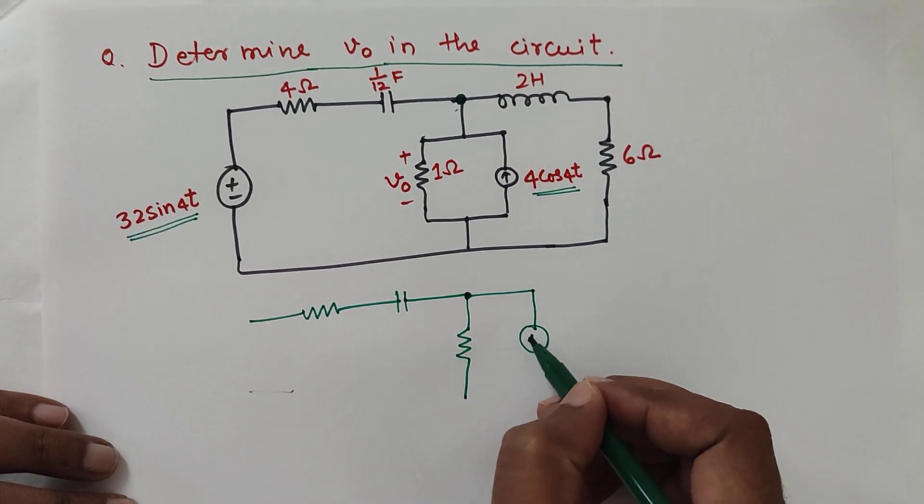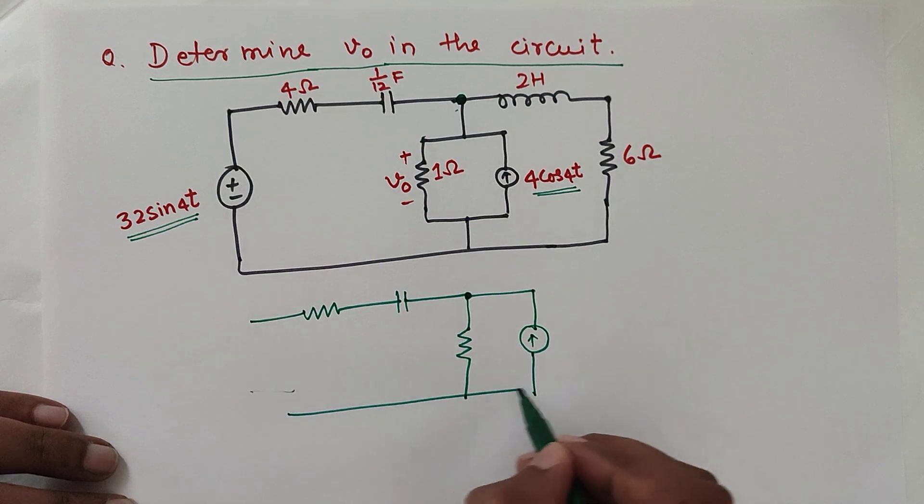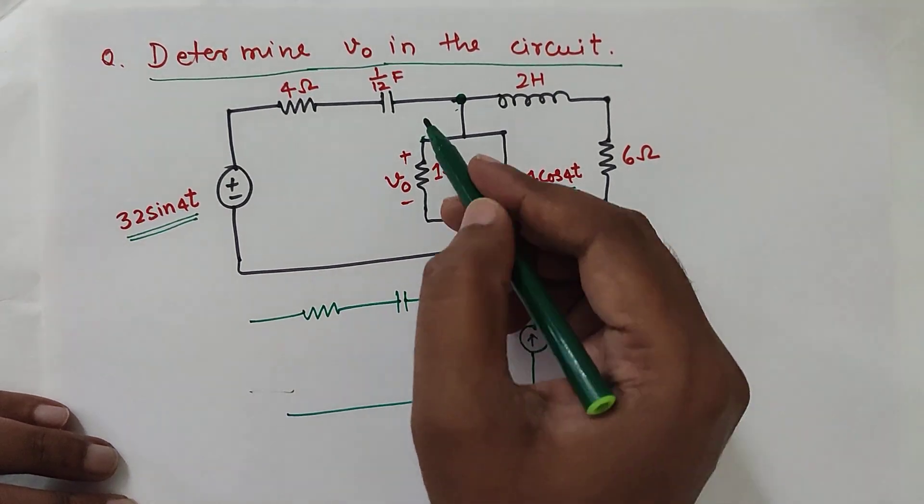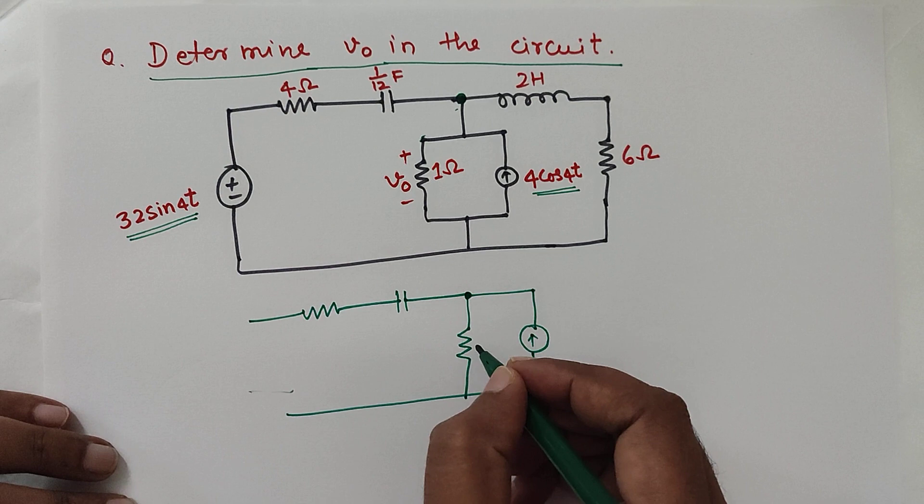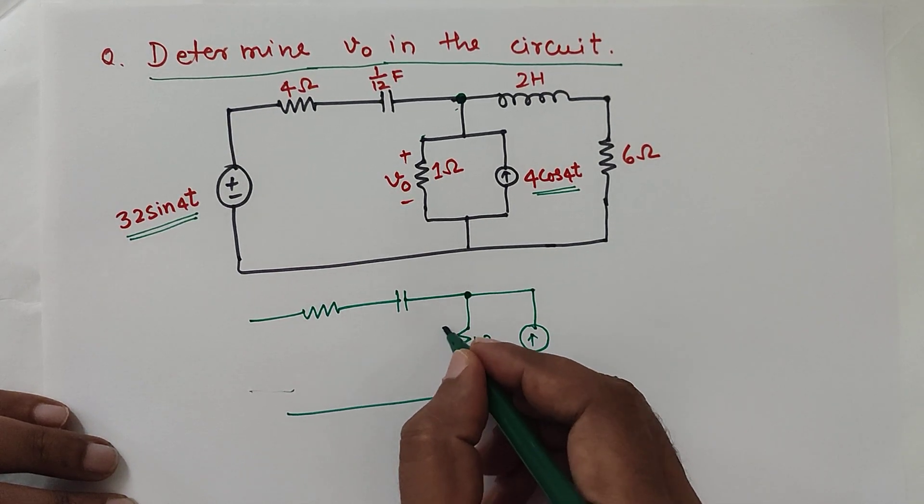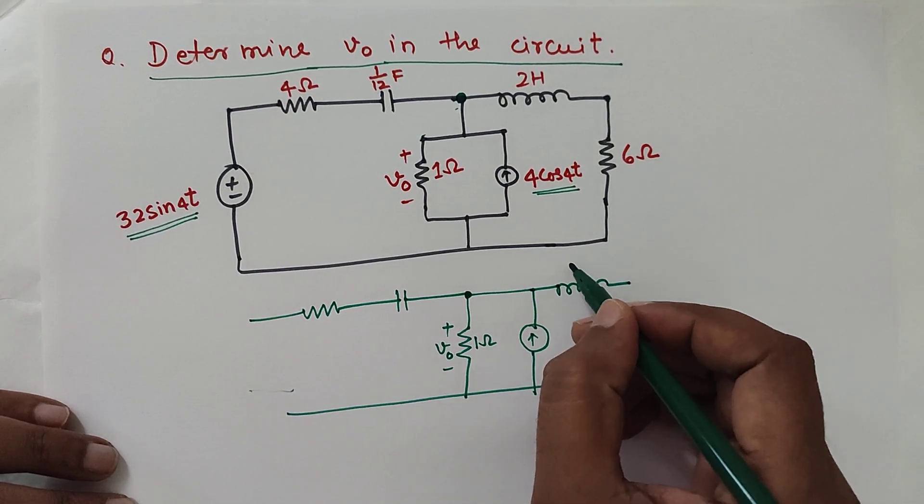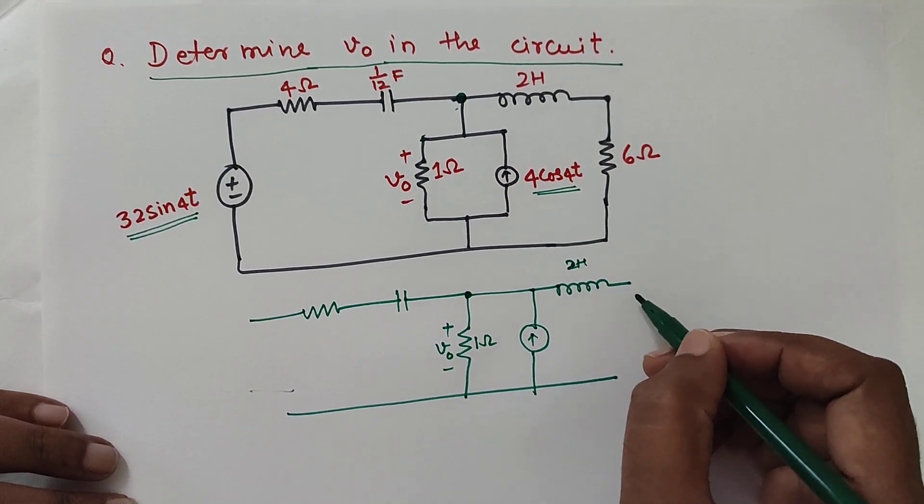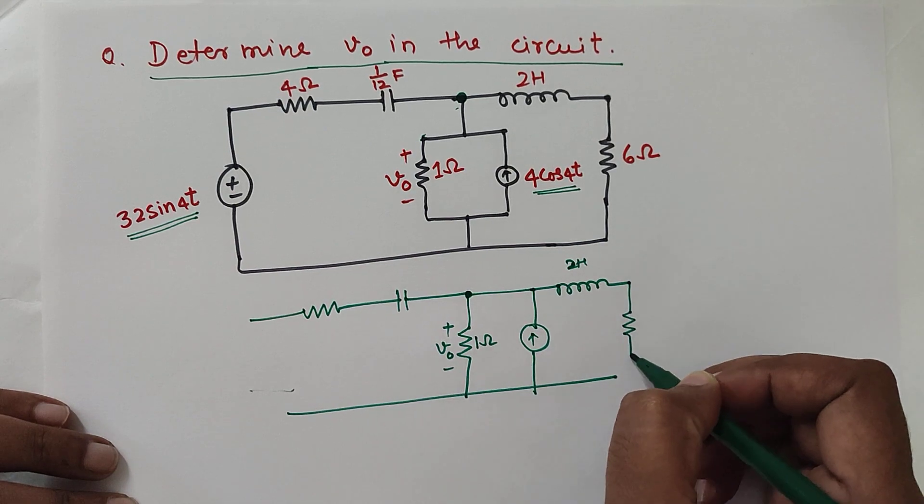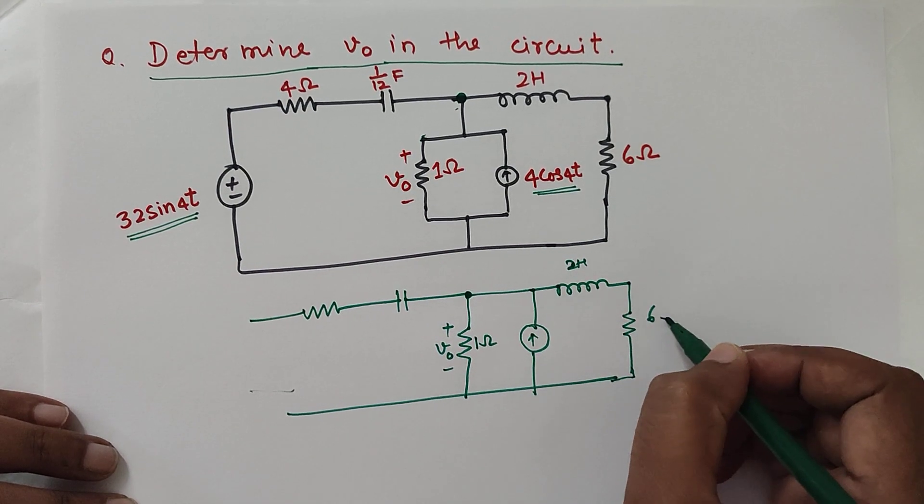When we redraw, we have these two components directly connected from here and here. So this is a 1 ohm resistor and voltage across this is V0. Then we have an inductor which is 2 Henry and a resistor which is 6 ohm.